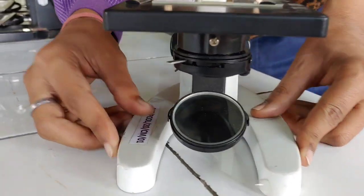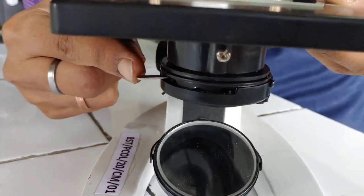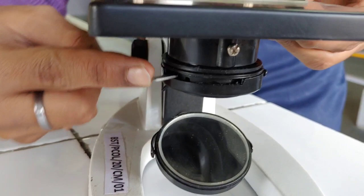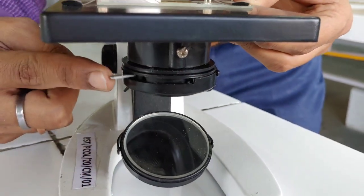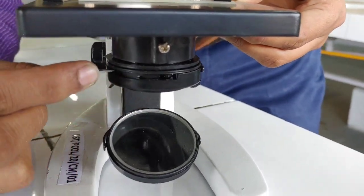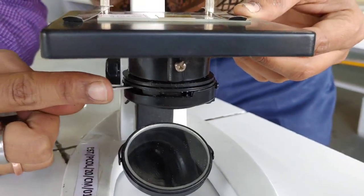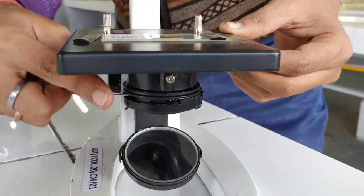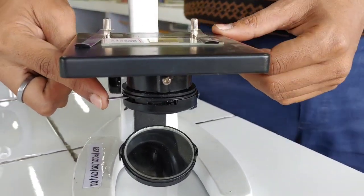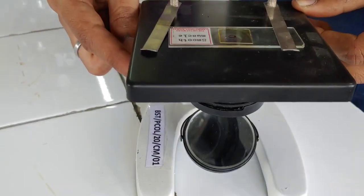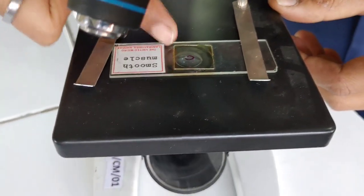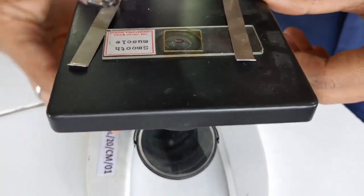Next is condenser. You can see in the video, a condenser is there. It is a system of lens which is fitted as a short cylinder mounted below the stage. This condenser helps to focus the light on the specimen which is over the stage.